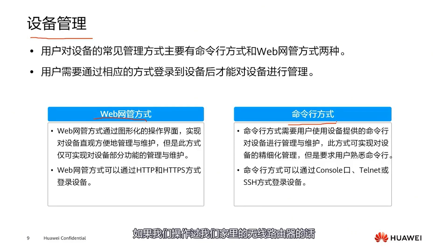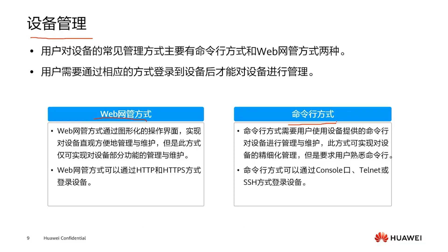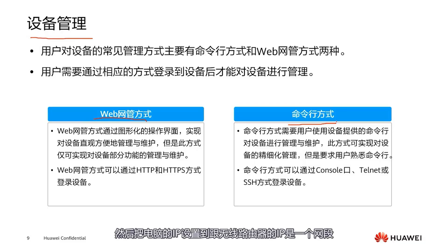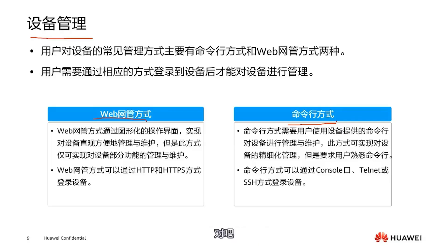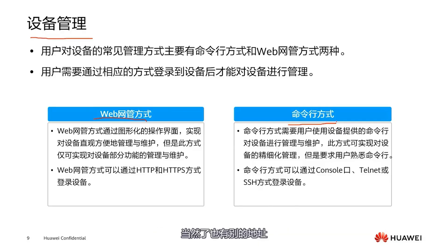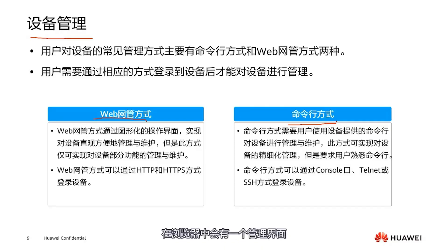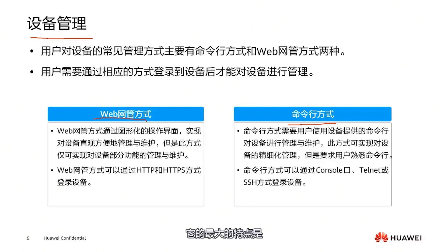How do we operate our home wireless router? We connect the wireless router to the computer, then set the computer's IP to be in the same subnet as the router's IP. Then we can directly access it — usually it's the private address 192.168.1.1, of course there are other addresses. After entering through this address, we will see a management interface in the browser.